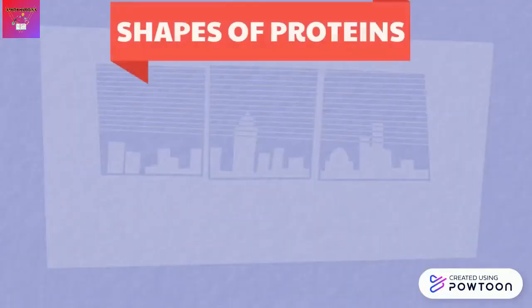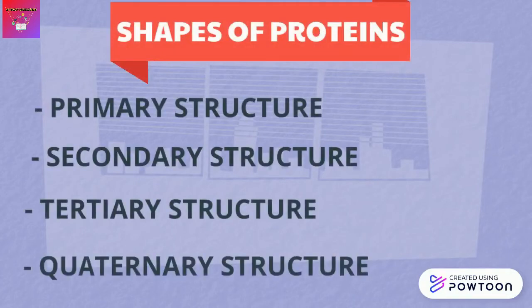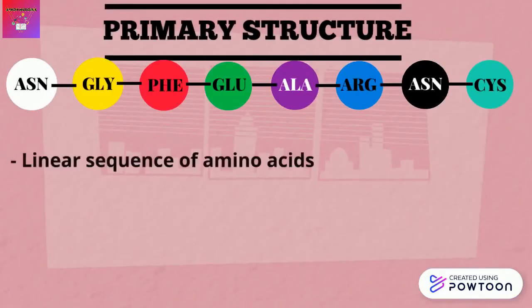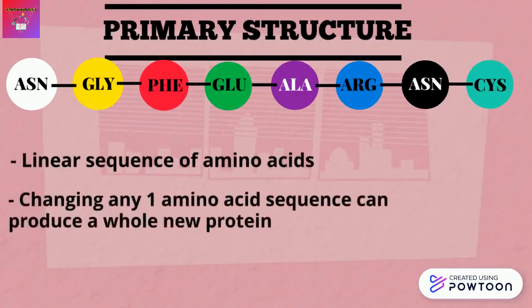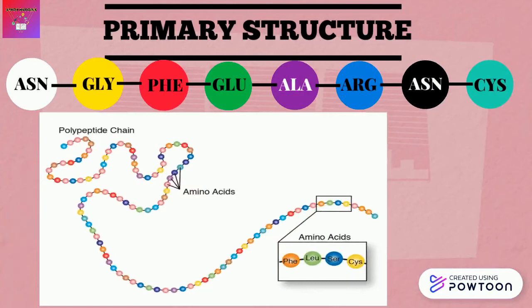Now let's talk about the shapes of protein. Proteins may have up to four levels of structural organization: primary structure, secondary structure, tertiary structure, and quaternary structure. The primary structure of protein is the linear sequence of amino acids. As you can see in the diagram, each amino acid is arranged side by side with another. Just imagine each amino acid is an alphabet used to create a word — changing even one alphabet can give us a new word. Therefore, changing any one amino acid sequence can produce a whole new protein. This sequence is determined by the information in our genes, which are part of the DNA of the cell. Long chains of this primary structure then create a polypeptide chain.